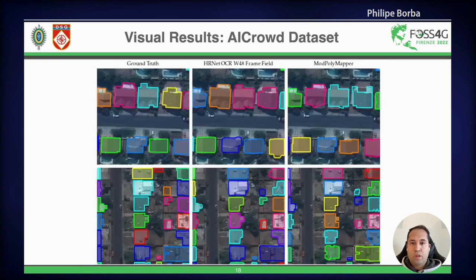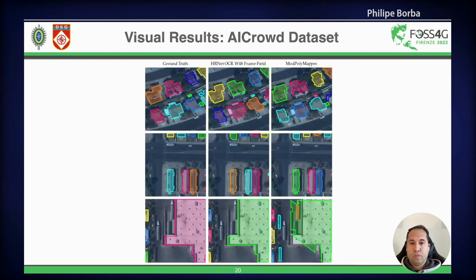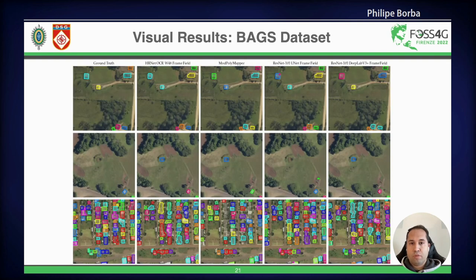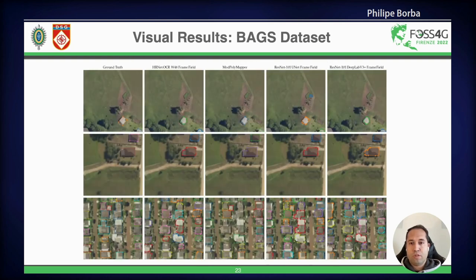Here are some results on the AI Crowd dataset. We can see that the proposed method of this research — the HRNet OCR W48 with FrameField — has better visual results than the PolyMapper on this dataset. Some other visual results also show that the PolyMapper did not handle large objects well.